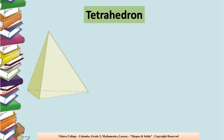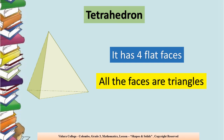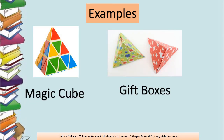Tetrahedron — that's the new shape. We'll see what are the properties. It has four flat faces, and all the faces are triangles in shape. What are the examples we can take for the tetrahedron? Magic cube and gift boxes — those are the examples for tetrahedron.